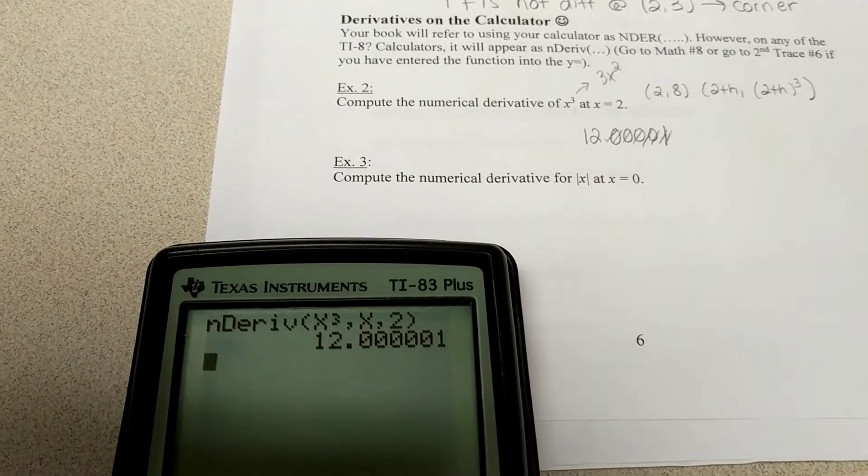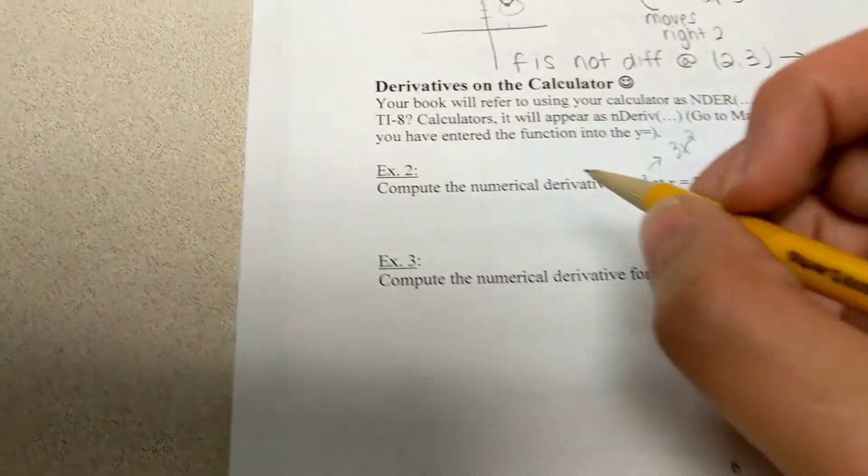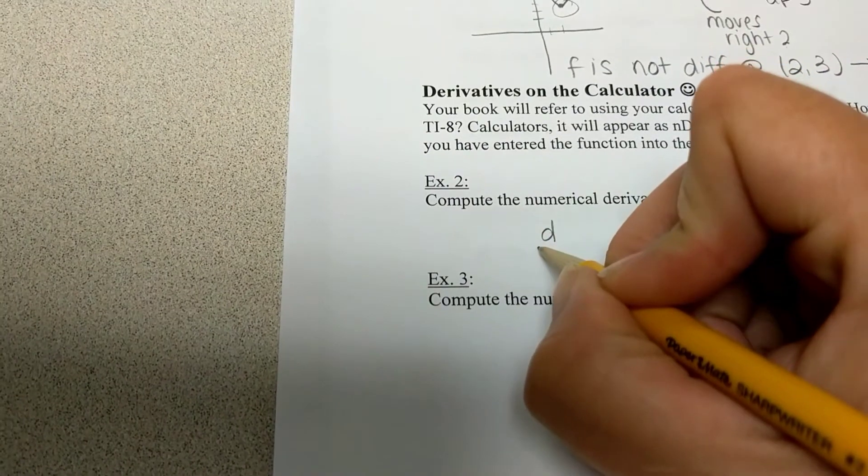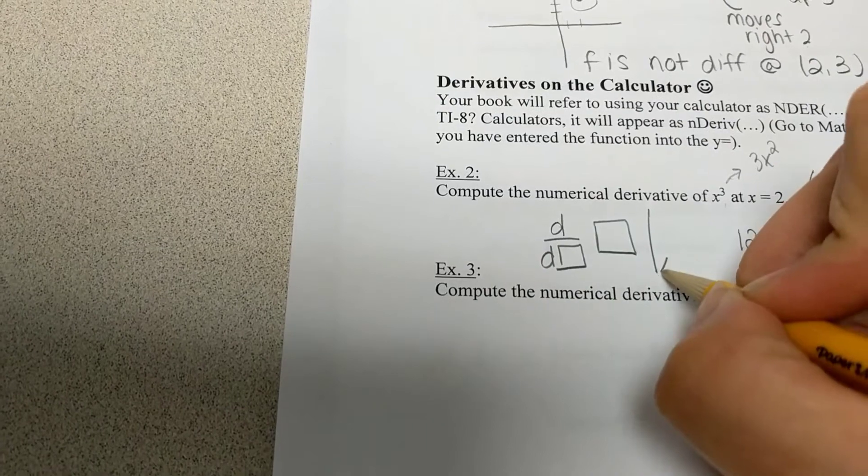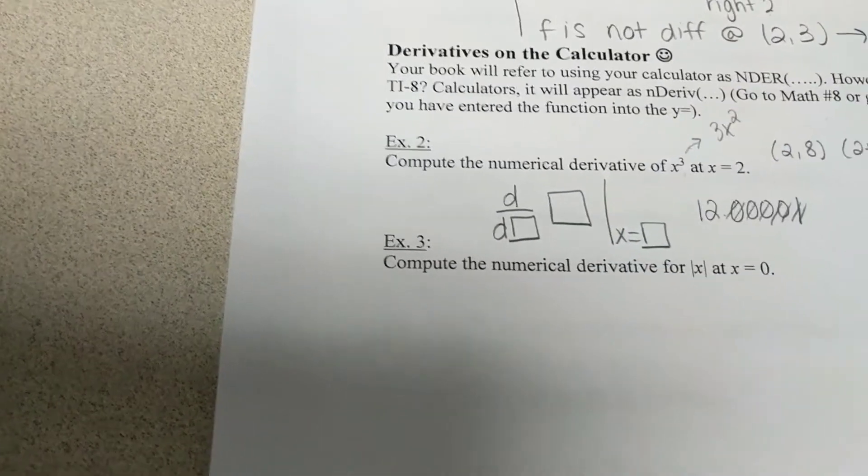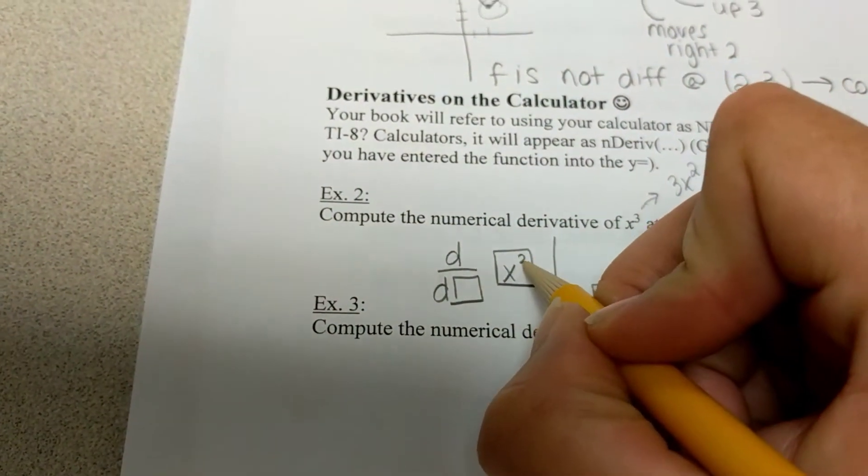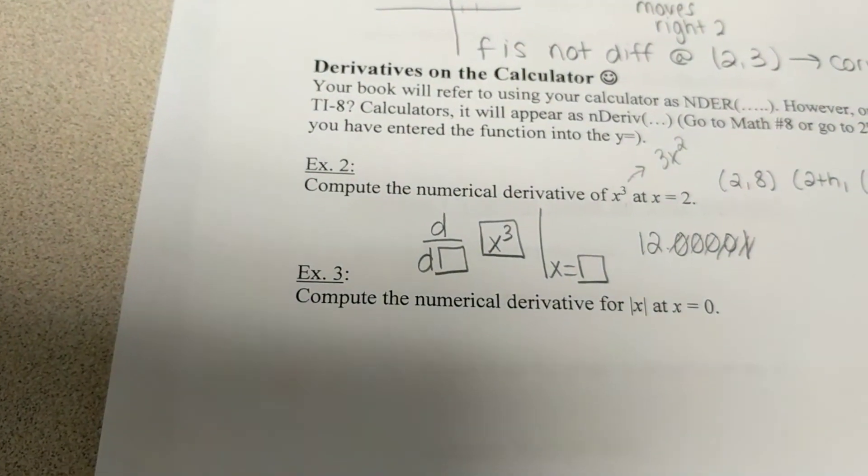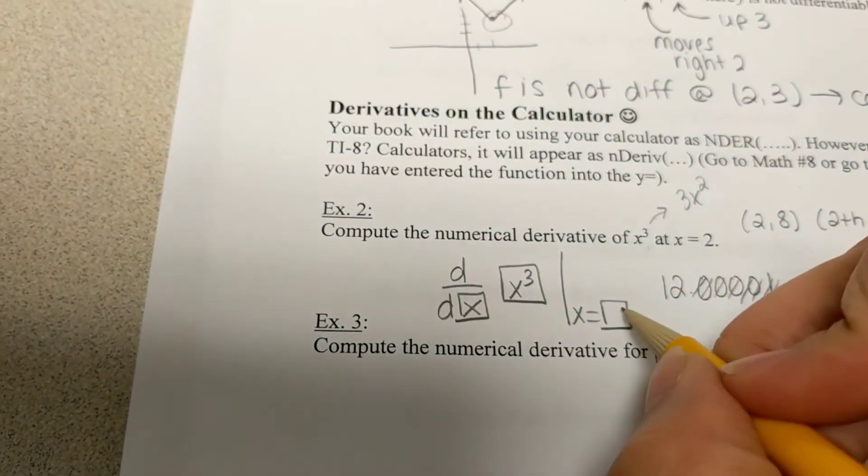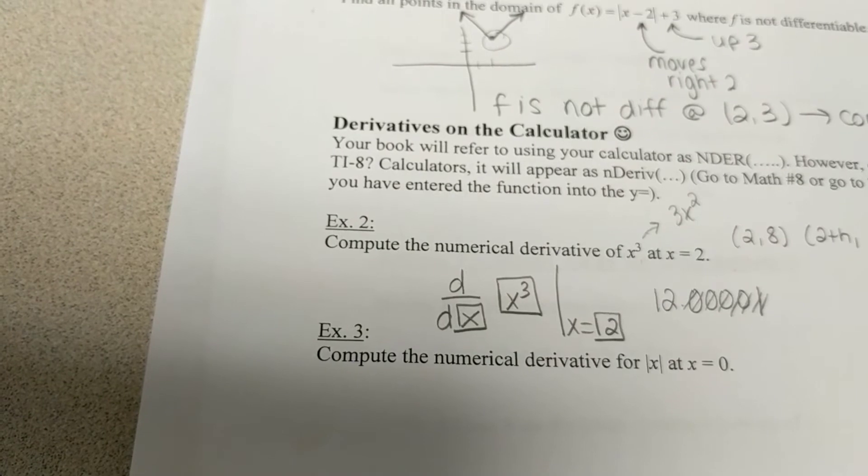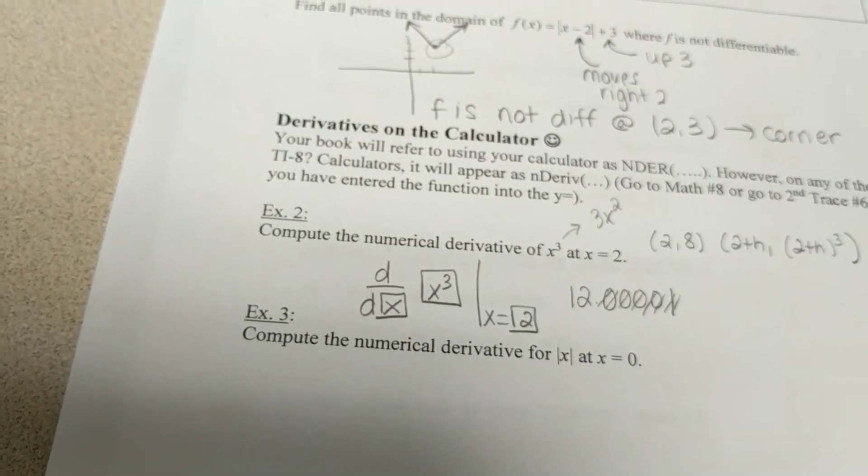If you have a TI-84, and I'm sorry I don't have one to show it, your calculator is going to give you a different syntax for nDeriv. And it's going to look like this. And it's going to have boxes. So, in your calculator, you're going to fill this box in with the x cubed. You fill this box in with the x. And this box in with the 2. So, if your calculator looks like this, that's how you would fill it in.